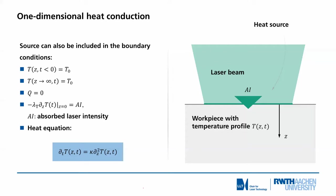In the next slide, the important part is that the absorbed intensity can also be put into the boundary condition. So at the point z equals zero — at the surface of the absorbing material — we will have the absorbed intensity as a source of energy flux. Then the equation simplifies even more: we just have the proportionality of the first derivative of the temperature to time to the second derivative of temperature to space, and the proportionality constant is just the thermal conductivity kappa. So this part was to describe where the heat conduction equation comes from, and now let's solve it.